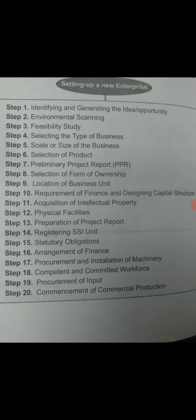The eleventh step is acquisition of intellectual property. Any property or right which provides a trade or commercial advantage is called intellectual property. This includes trademarks, copyrights, and patents. If any intellectual property right is required, the entrepreneur should follow the process for its acquisition.